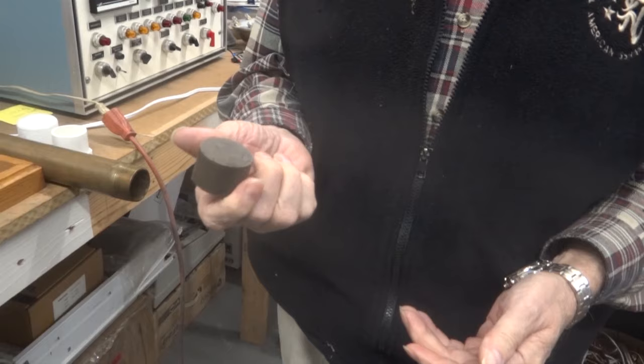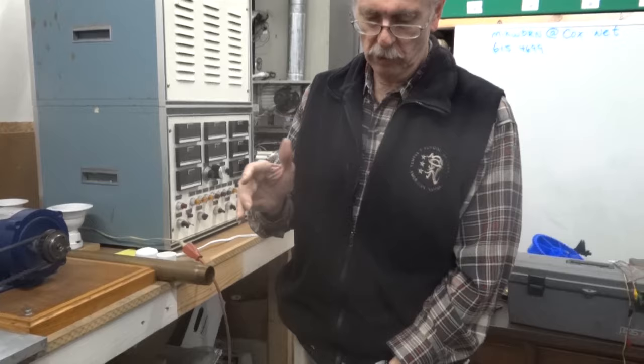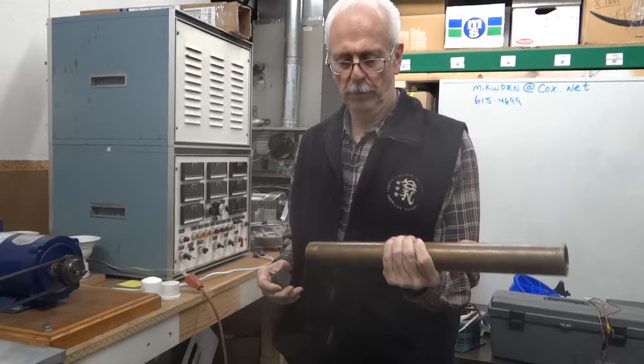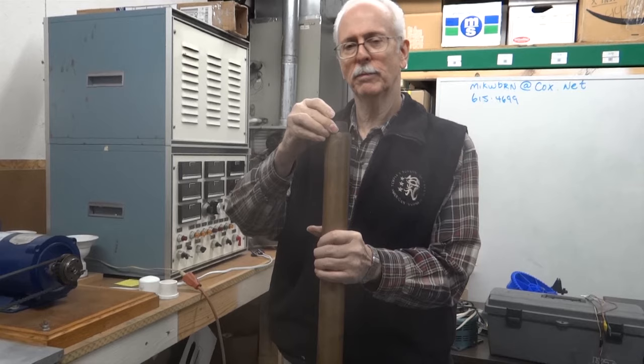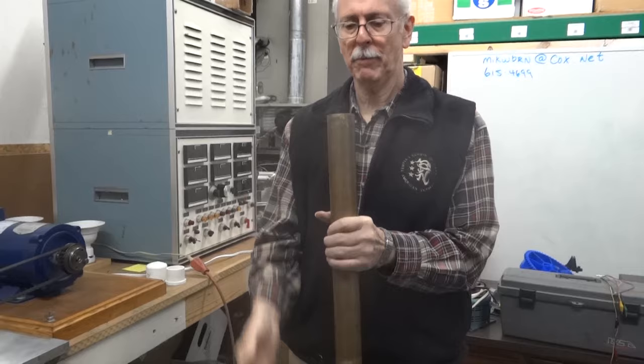This is a Samarium Cobalt Magnet. There's absolutely nothing unusual about it except for the fact that it's extremely powerful. If I drop this, it falls in the gravitational field just like any other object would. This is a brass pipe. Now, when I drop this into the brass pipe, you might expect the same results, but believe me, it will be very different because it's going to take a great deal of time for that thing to transit the pipe. Now, the question is, why does that happen?